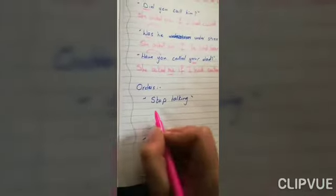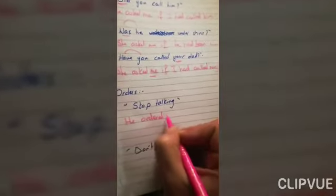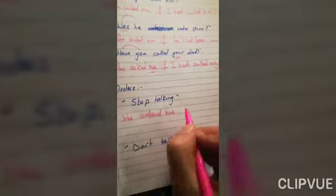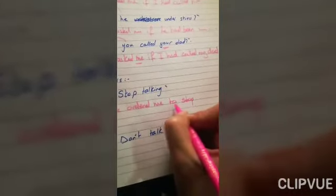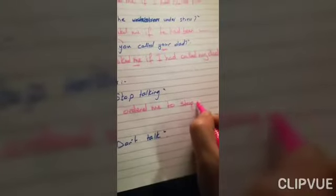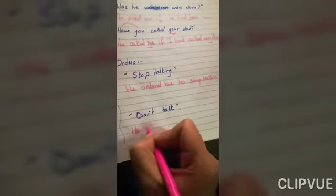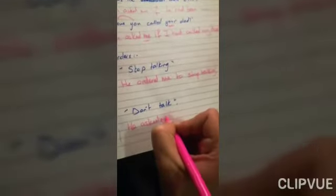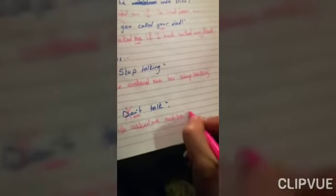Now moving to the orders. 'Stop talking, he ordered me.' For orders, you put 'to' and then you continue the sentence with the infinitive: 'to stop talking.' For negative orders — 'don't talk, he ordered me' — because I have 'not' here, I have to put 'not to talk.' So for a positive order it's 'to + infinitive,' and for a negative order it's 'not to + infinitive.'